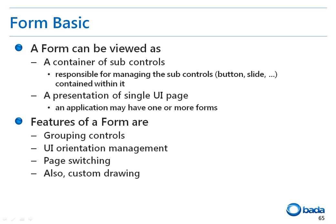The black rectangle in the figure is called a form. We can call the picture on the screen a page — a form is the basic unit which forms a page. Therefore, any application that requires a screen transition may have more than one form. A form provides the following features: it supports the grouping of other UI components called controls, relocates the screen when the phone orientation has been changed, and enables custom drawing.